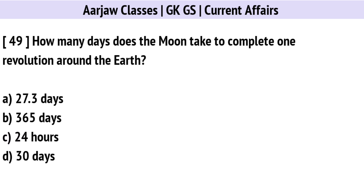How many days does the Moon take to complete one revolution around the Earth? The right option is A: 27.3 days.